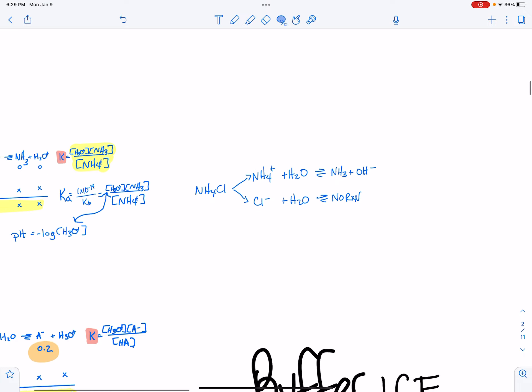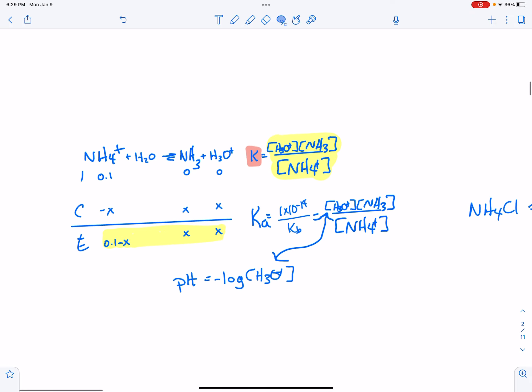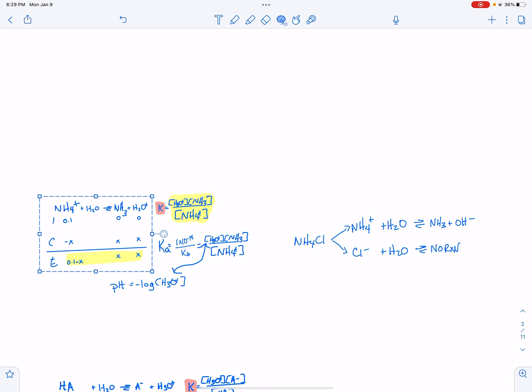Then when it comes down to actually really calculating the pH, you're going to be using an ice chart here. So it's the same ice chart before. It's the same pH equation as before. It's the same setup over here, products of reactants. Here's the difference.